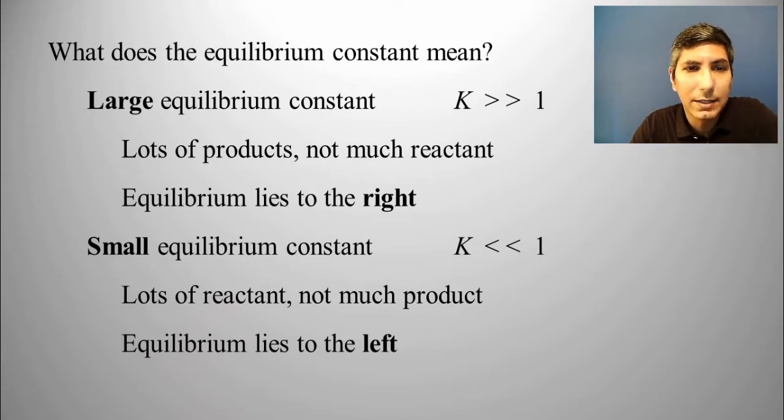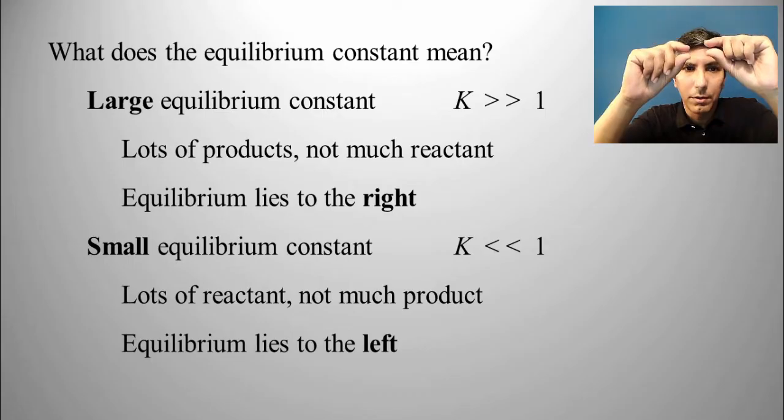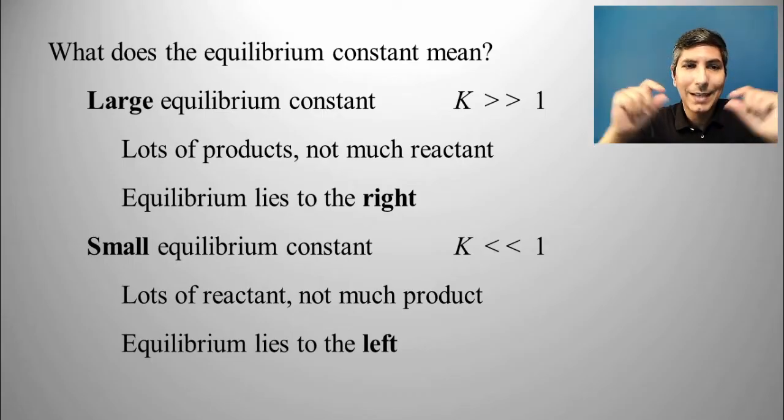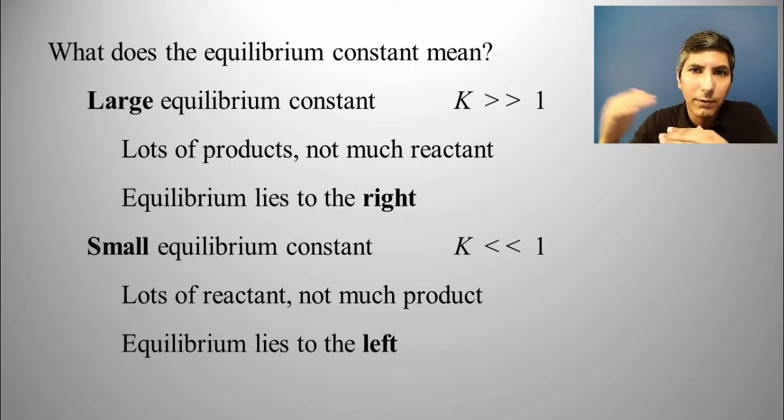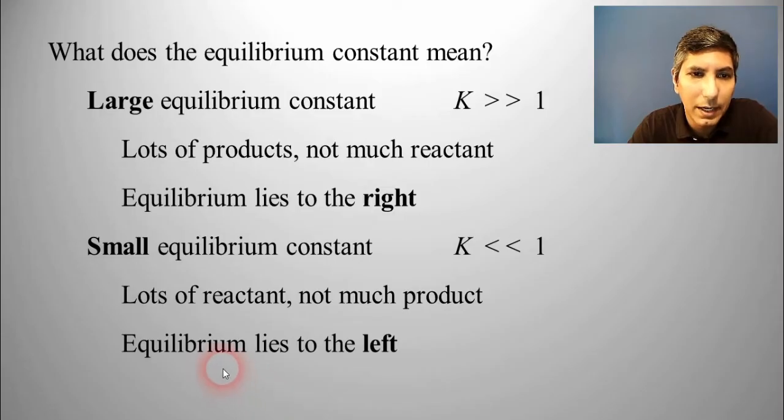And we say that's the case because if you don't have a whole lot of product, that means the product is written in the numerator, and that's going to be a small number. And the reactants are written in the denominator, and that's a relatively large number. So that means that when you divide it out, you have a small number. So in that case, we'd say equilibrium lies to the left.